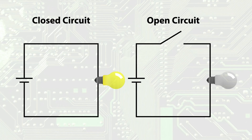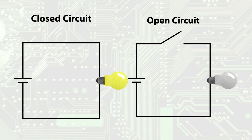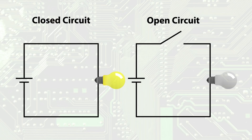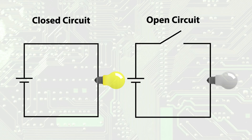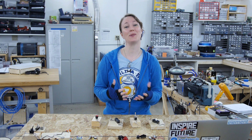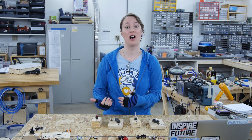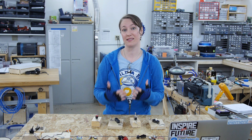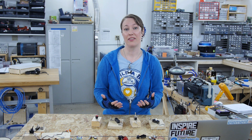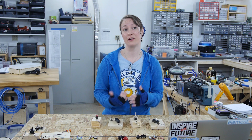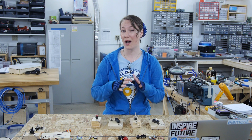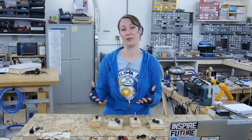If we look back to when we talked about open and closed circuits, we'll remember that electricity needs a closed loop in order to flow. When the loop is broken or opened, electricity stops flowing. That's one place where switches come in. While switches are often used to turn devices on and off, they can also be used to send signals. There are many uses for switches and therefore there's a wide variety of switches with different properties.